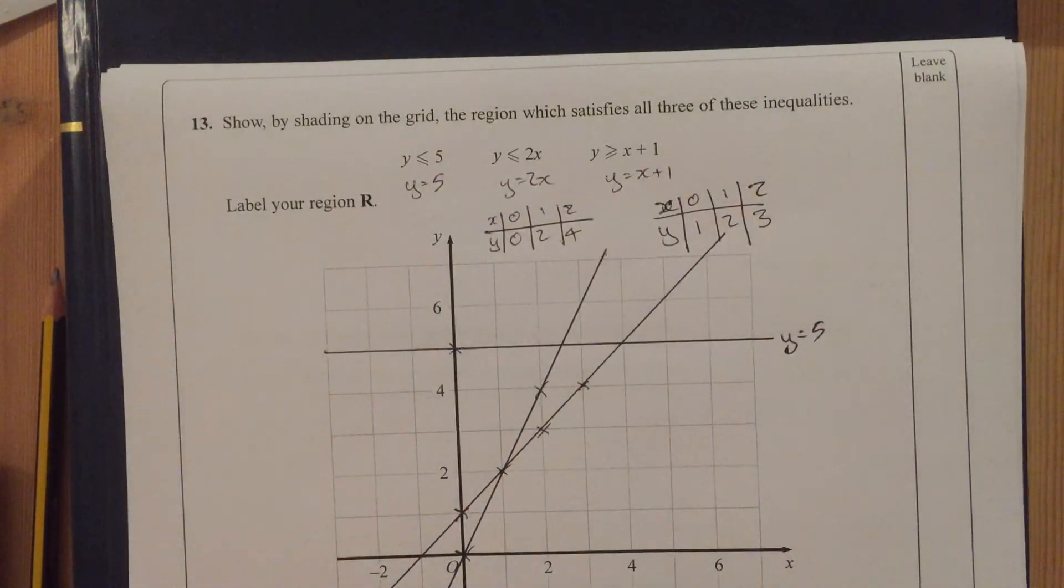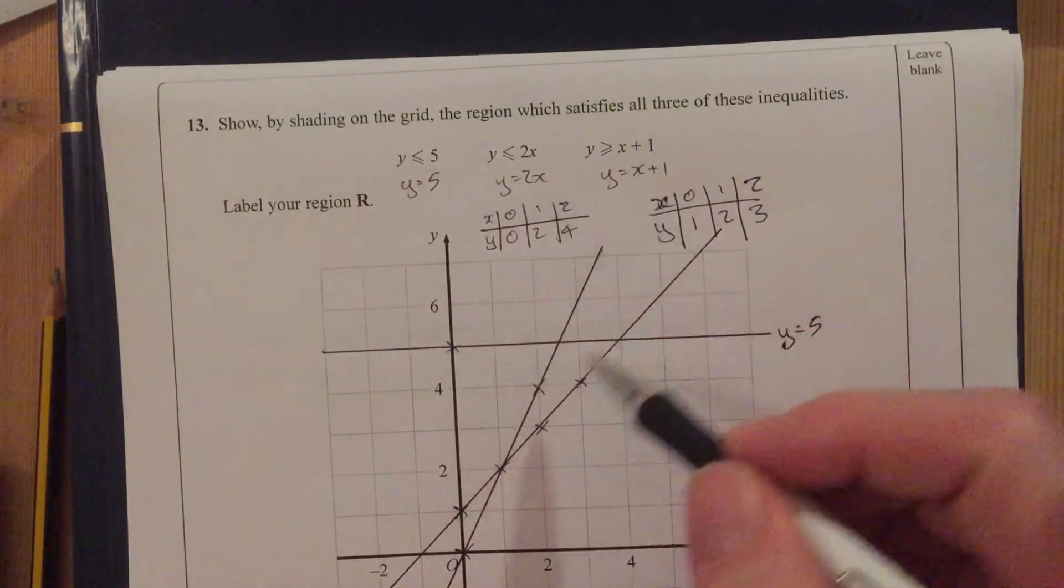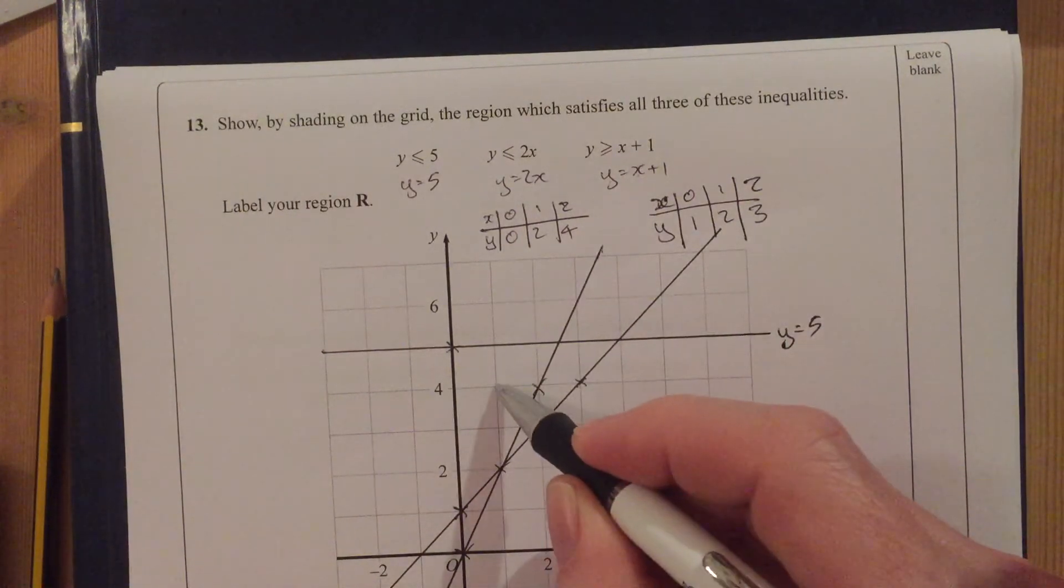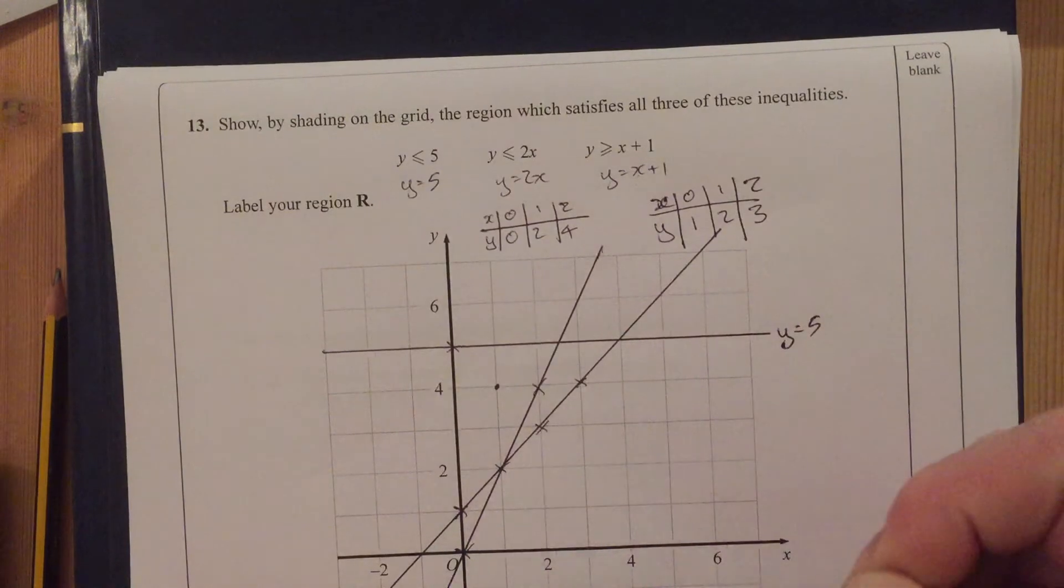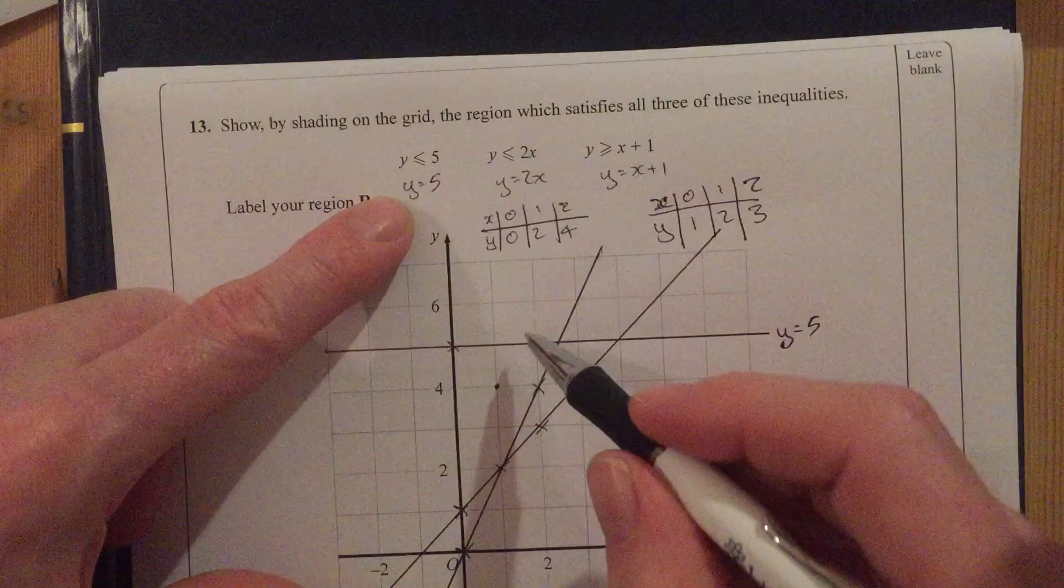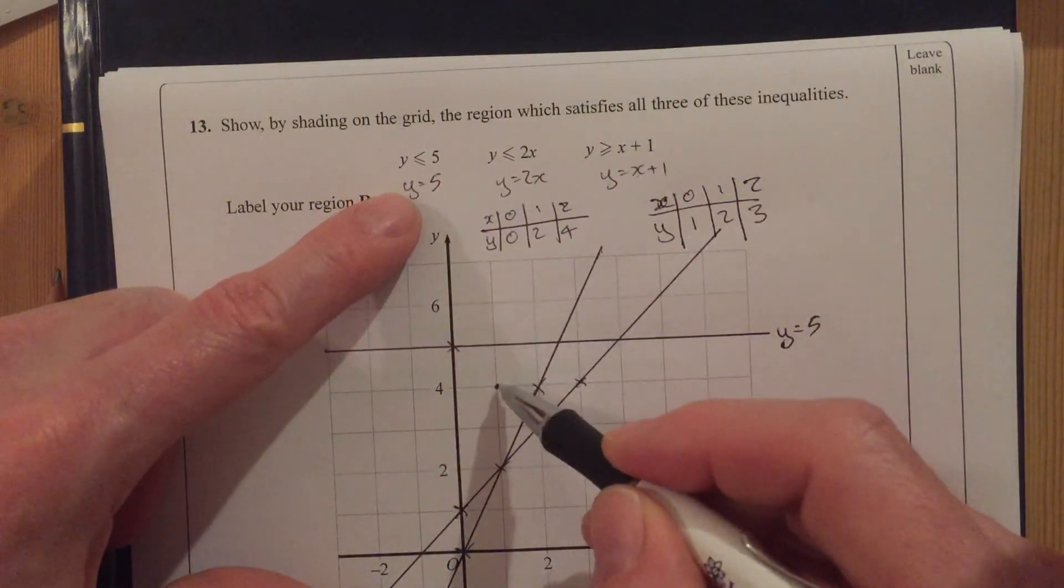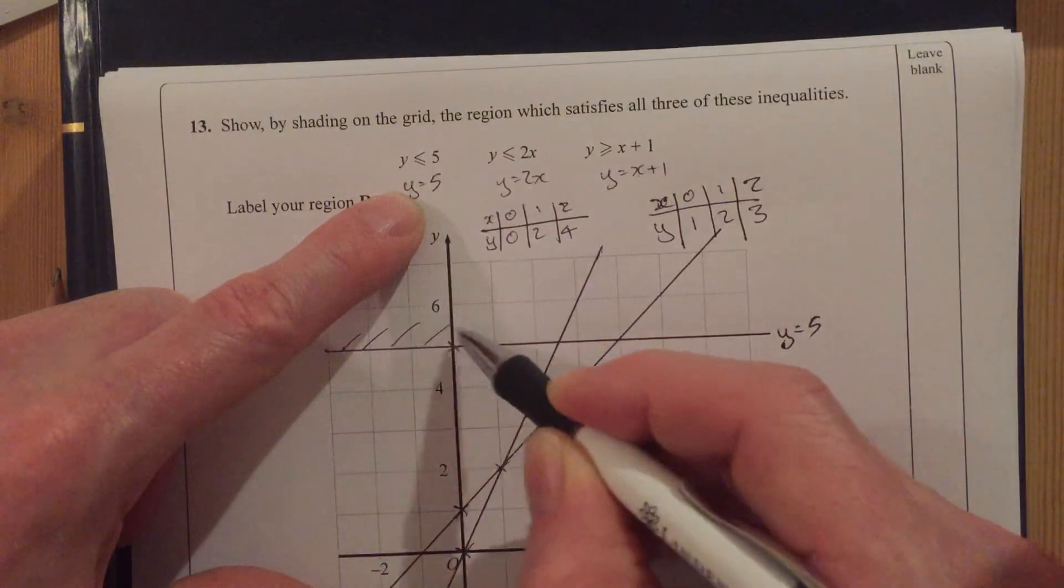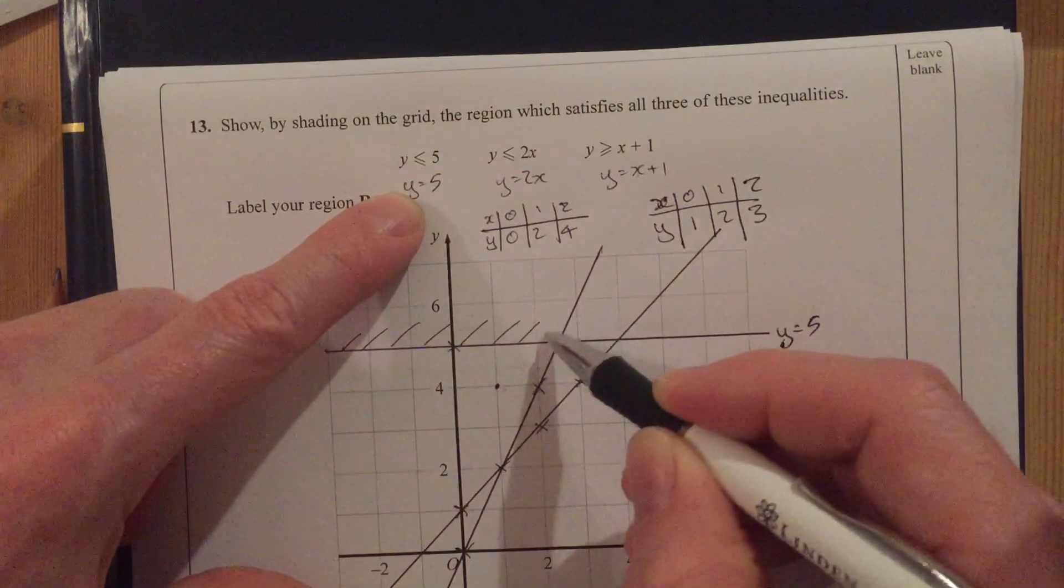OK. And then we've got to shade the right side of this. Well, I tend to pick a point and see which side it's going to be. So let's pick this side, this point. Is this going to be in my region? Well, y is less than 5. Is the y value less than 5? Yes, it is. So I'm going to shade the bit that I don't want. Shade the bit above.